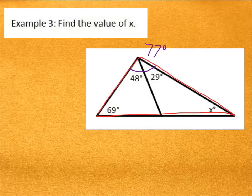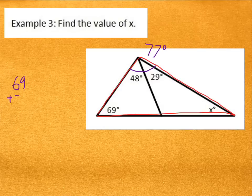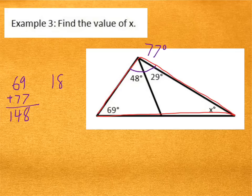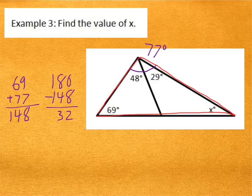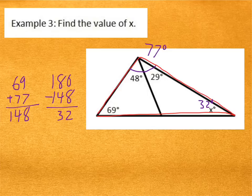Okay, now I could figure out the value of X. I can add 69 and 77, which would give me 148. Then subtract that value from 180, and we would get 32. So the value of X is 32. See if you can figure out the values of these other angles right here and see if it makes sense.